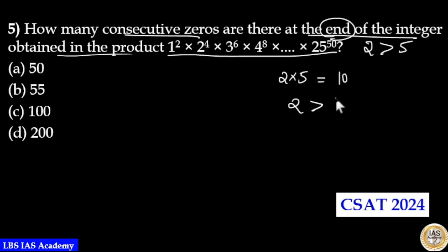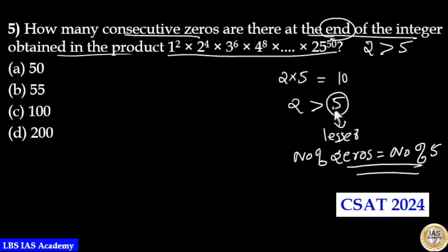When the number of 2's is greater than the number of 5's, the number of zeros depends upon the number of 5's because number of 5's are lesser in number. Then number of zeros equals number of 5's. Here 5 is lesser in number.